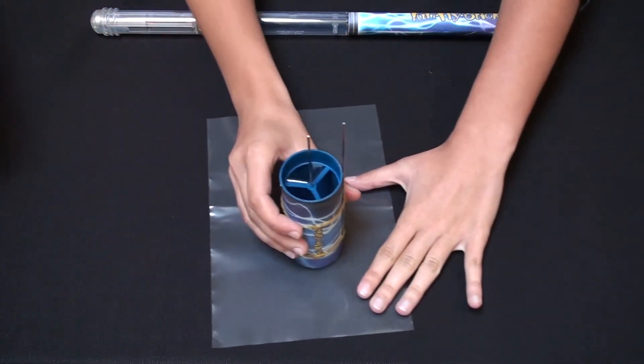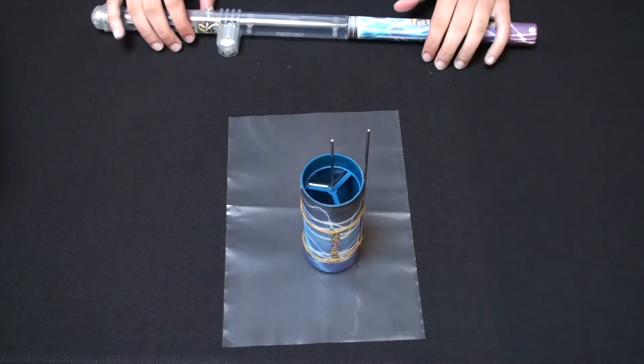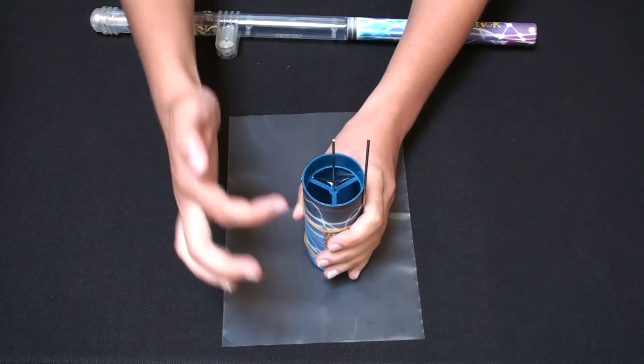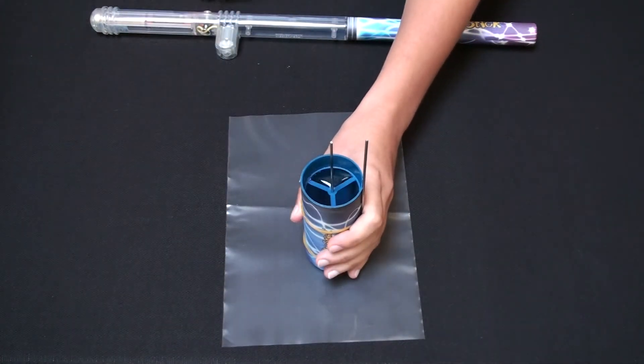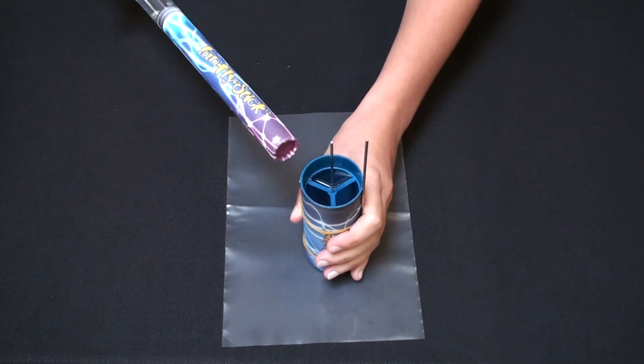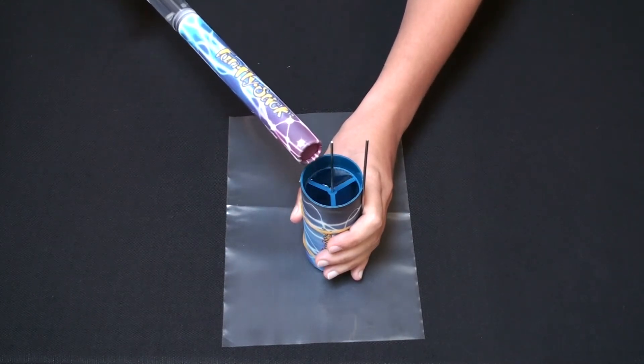Now we will charge the Leyden jar. Hold the Leyden jar, making sure your fingers are touching the outside pin. Approach the pin inside the jar with the Funfly stick. Charging time should be 15 to 20 seconds.